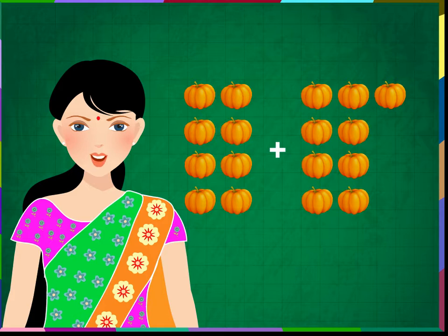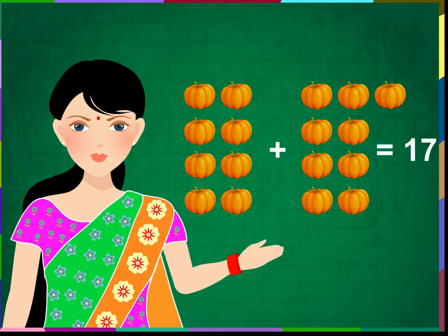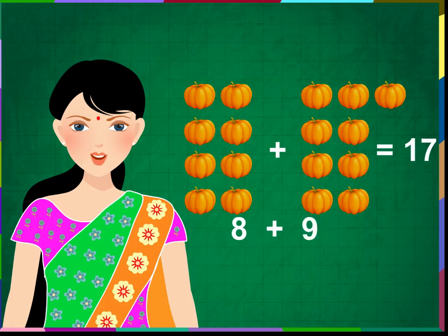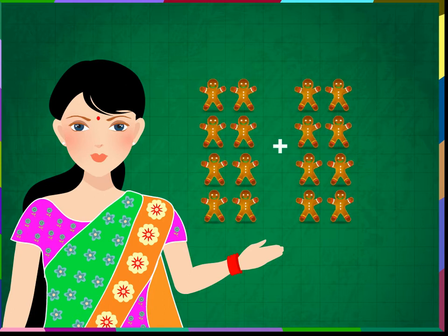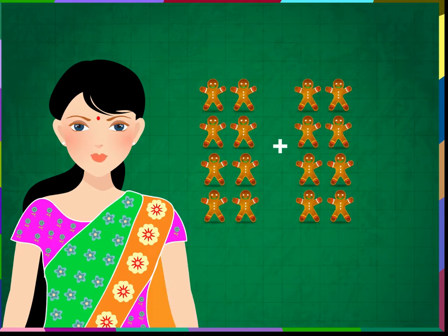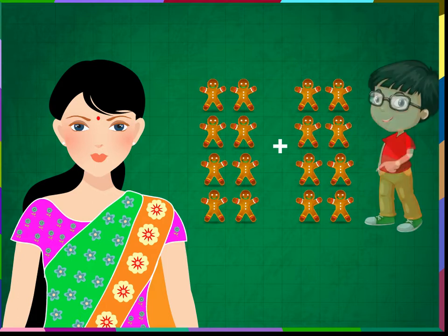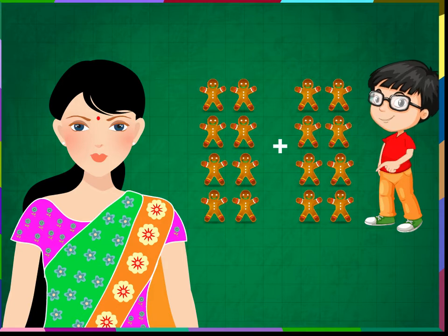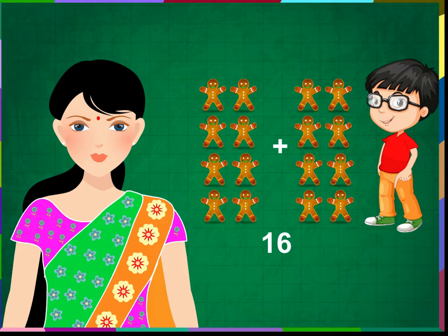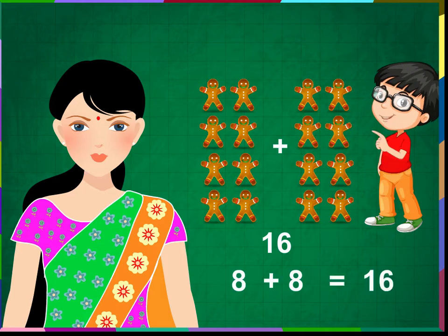8 pumpkins and 9 pumpkins make 17 pumpkins. 8 plus 9 is equal to 17. Can you add these objects and give the sum? 8 and 8 makes 16. 8 plus 8 is equal to 16.